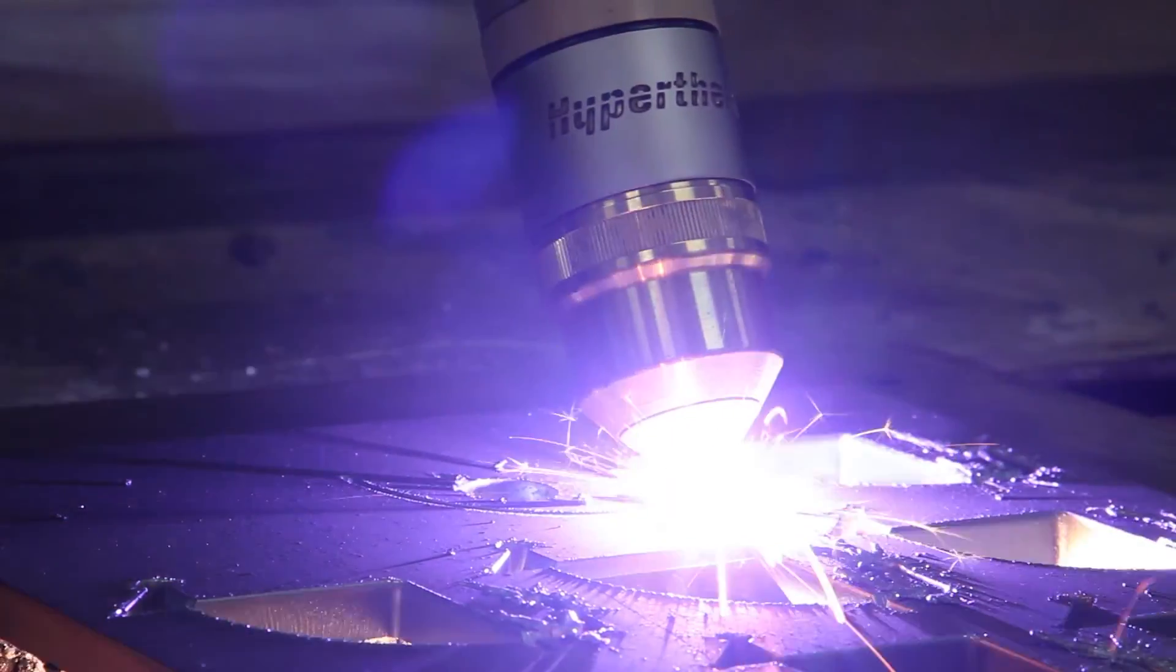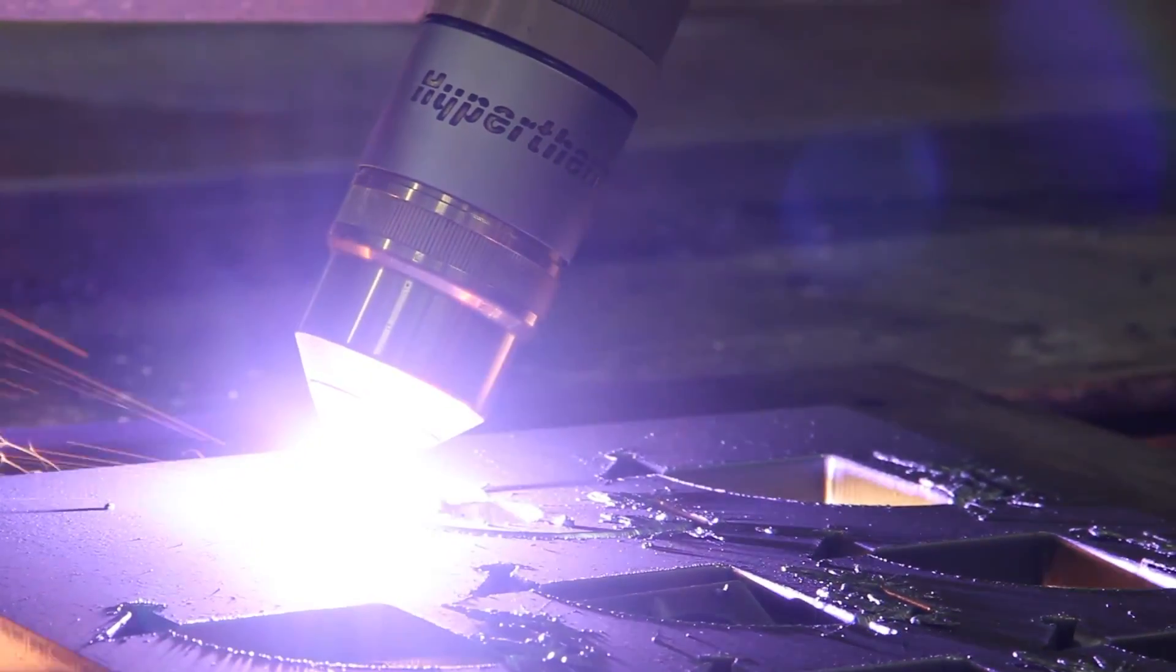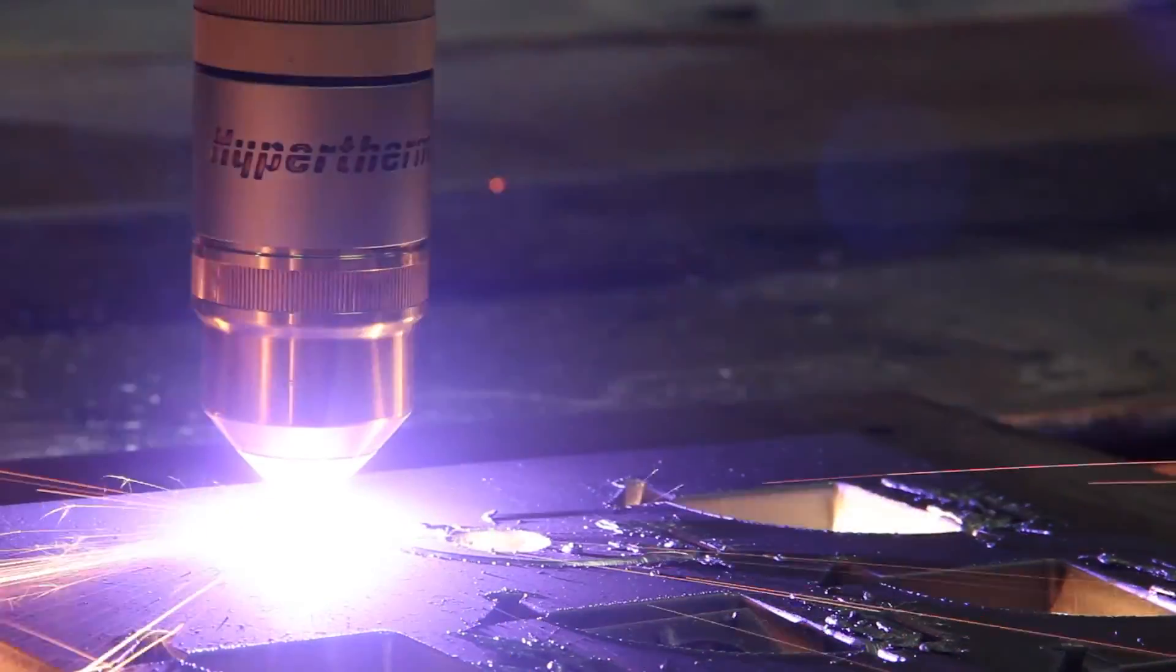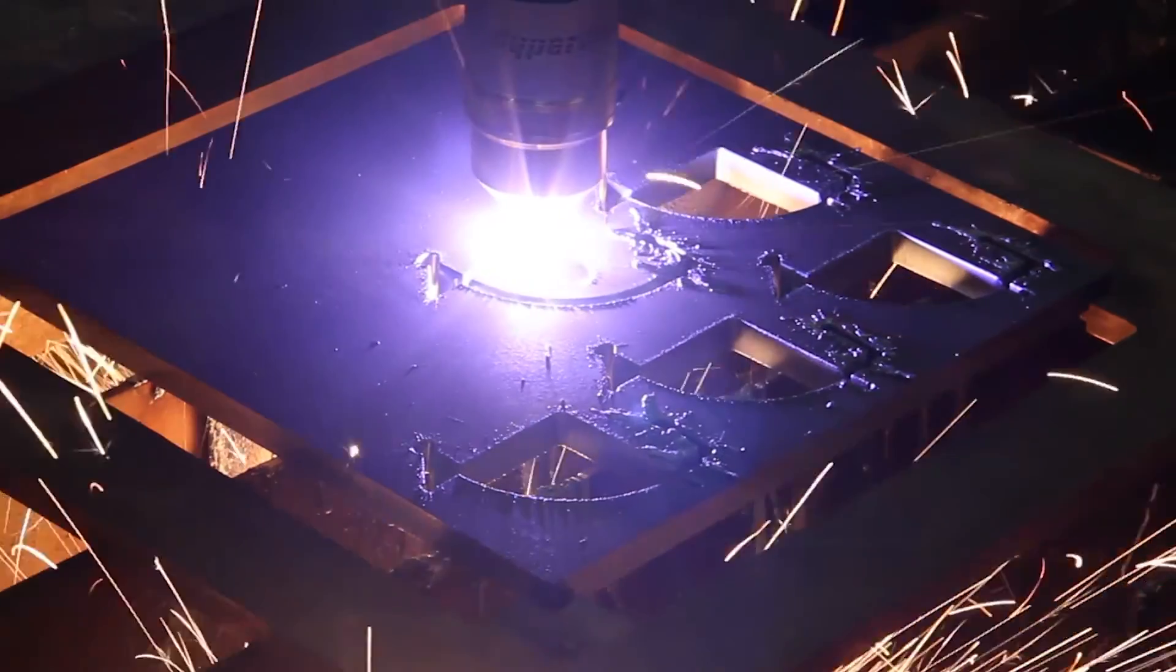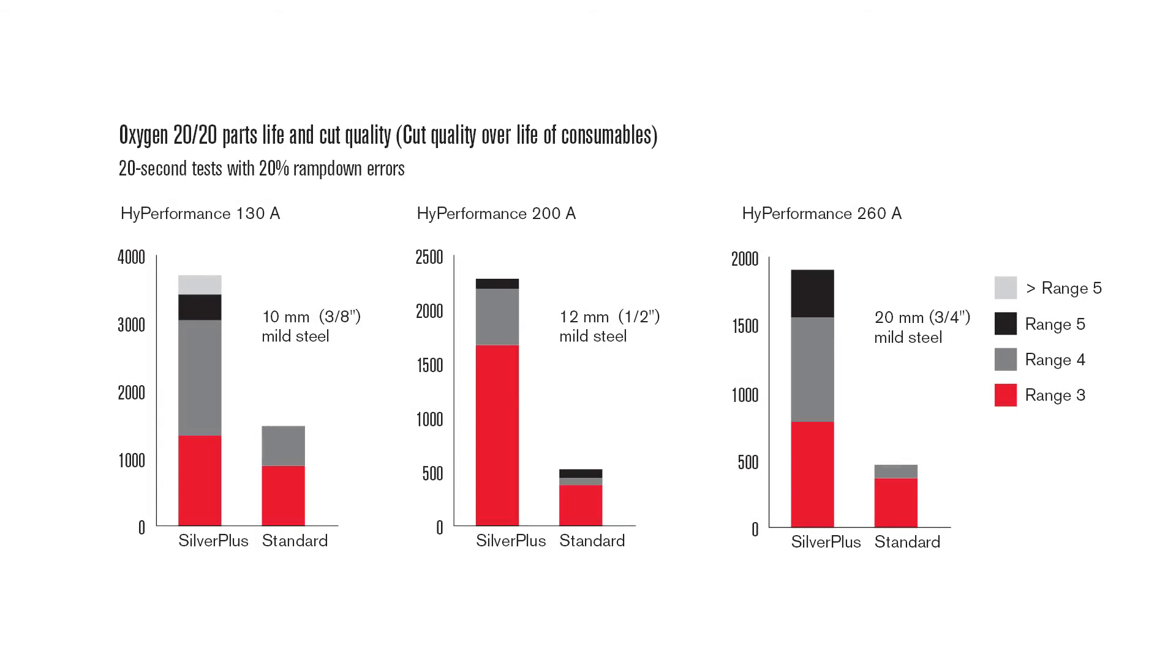So what does all this mean for your operation? Typically, companies that use silver plus electrodes experience double the life of electrodes and nozzles, which reduces the cost of their cutting operation. The graphs pictured here show the improved life of silver plus electrodes over standard hypertherm copper electrodes.